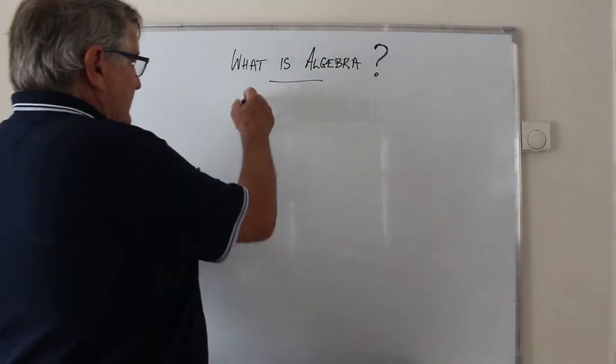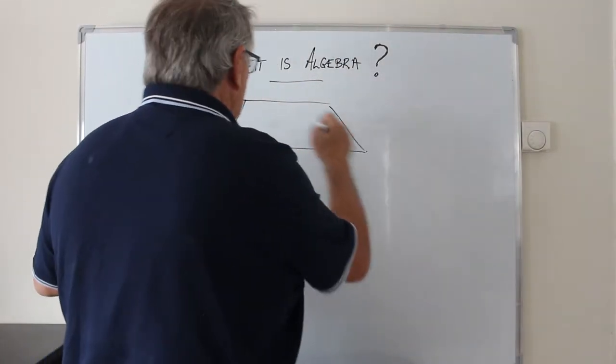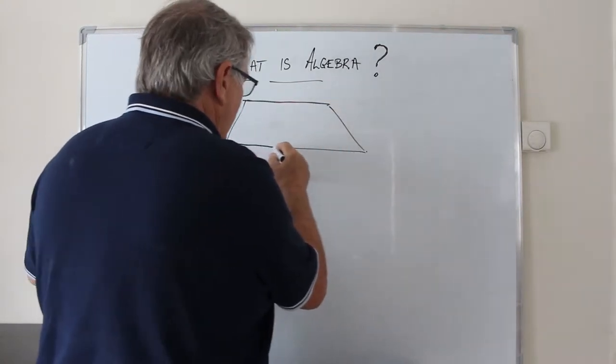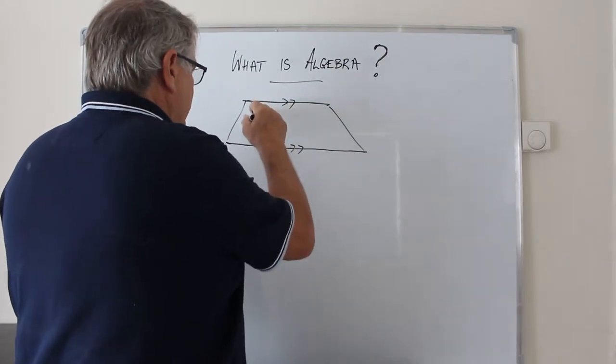For example, let's say we've got a trapezoid, a trapezium. In America it would be a trapezoid. It's a shape with two parallel sides and a particular height.